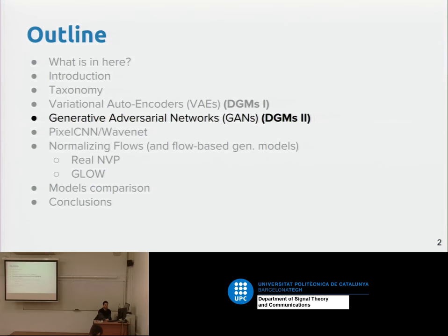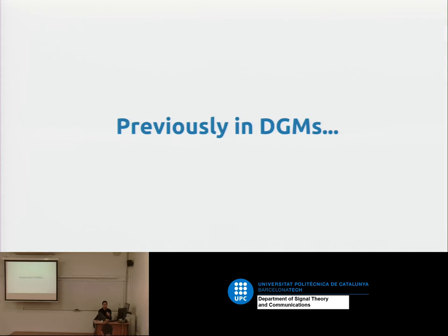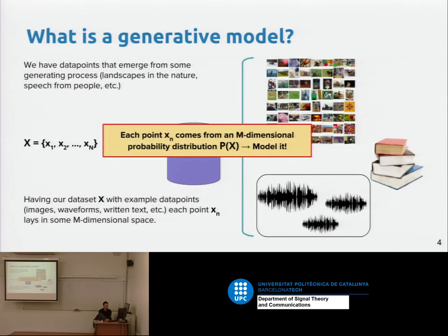Let's begin with a quick recap. Previously in deep generative models, we saw what a generative model is. We have a dataset with points X — whatever those Xs are, images, waveforms — and we want our model to be able to generate things that resemble those training data points, but not to copy them.